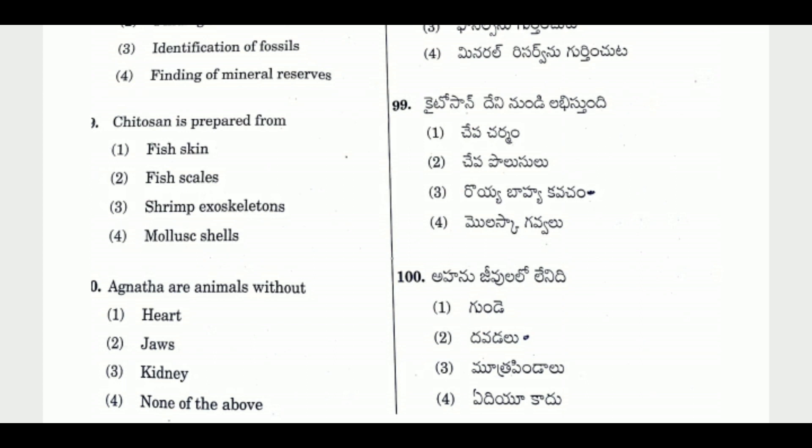Question 100: Egg-less animals — the right answer is Option 2, Jazz (invertebrates without eggs in certain classifications).